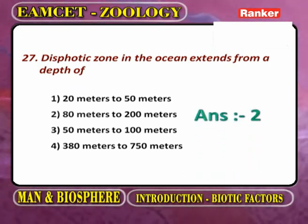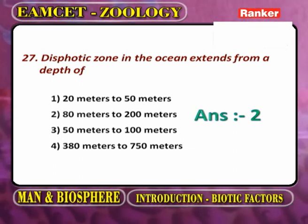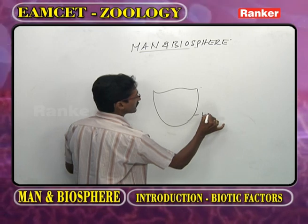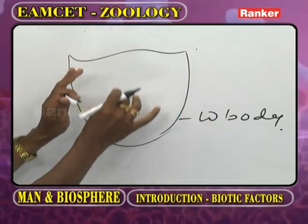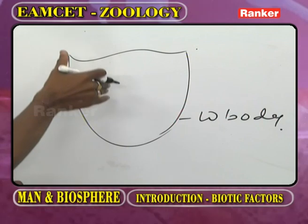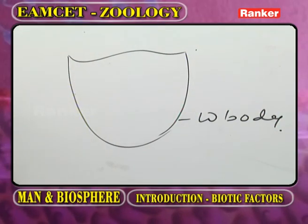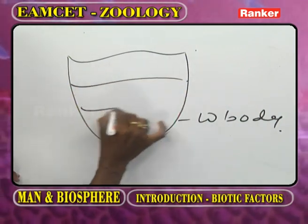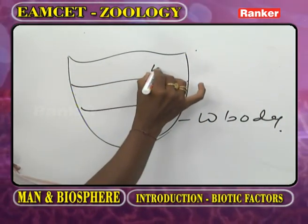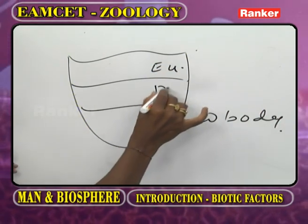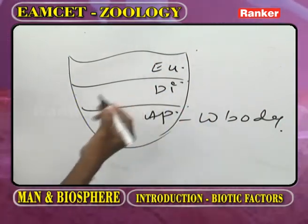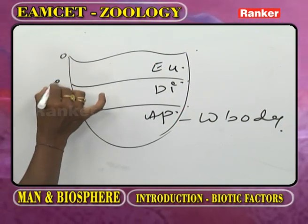The photic zone in the ocean: as depth increases, light intensity decreases. The water body is broadly classified into three regions - euphotic (0 to 80 meters), dysphotic (80 to 200 meters), and aphotic (beyond 200 meters).